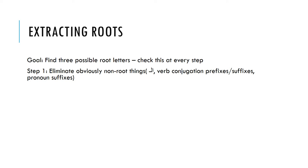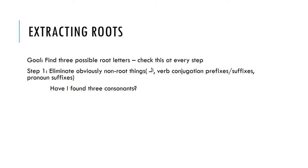Sometimes it'll be a little confusing — you have a pronoun suffix like a kāf and you wonder: is that part of the root or a suffix? Sometimes you just have to keep that as ambiguous in your mind — it might be one, it might be the other. Once you've done this, look: have you found three and only three consonants? If so, you can probably go to the dictionary. Step two: if you still have extra stuff — some wāws and yās you're not sure about — ignore them for the moment. Have you found three and only three consonants? If you have, go to the dictionary.